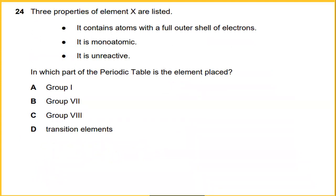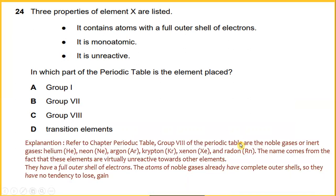Properties of element X are listed. It contains atom with a full outer shell of electron, it is monoatomic and it is unreactive. In which part of the periodic table is the element placed? Refer to chapter periodic table. Group 8 of the periodic table are the noble gases or inert gases: helium, neon, argon, krypton, xenon, and radon. These are from group 8, noble gases. The name comes from the fact that these elements are virtually unreactive towards other elements. They have a full outer shell of electron. The atom of noble gases already have complete outer shell so they have no tendency to lose gain. So the answer is group 8.